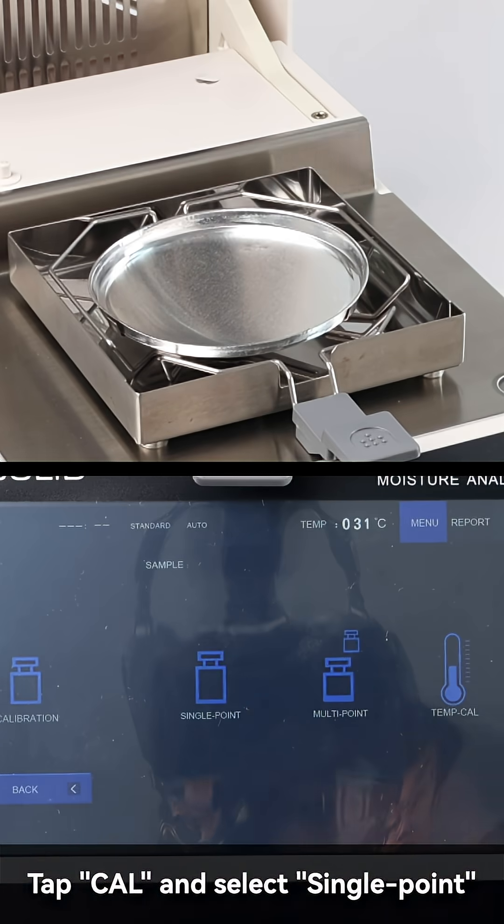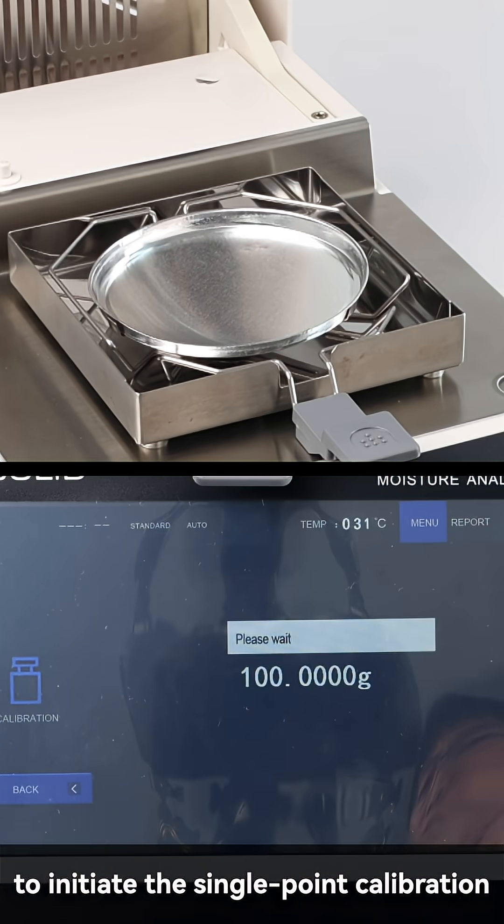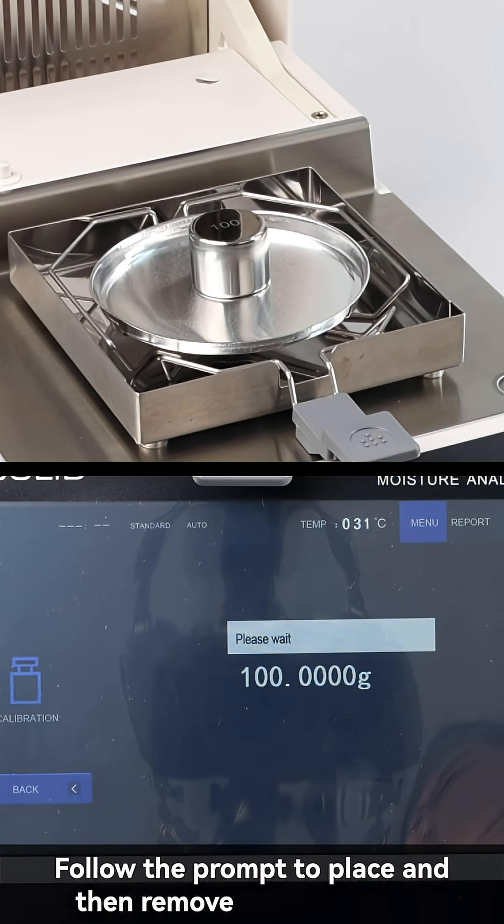Tap calibration and select single point to initiate the single point calibration. Follow the prompt to place and then remove a 100 gram weight.